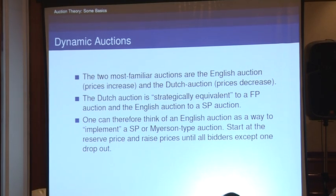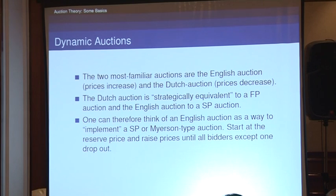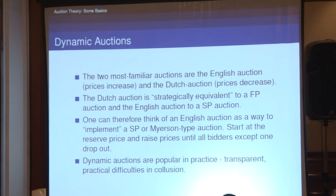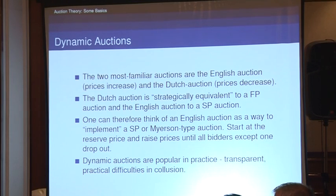One can think of an English auction, where prices rise until all except one bidder drops out, as a way to implement a Myerson-type optimal auction. Dynamic auctions are popular in practice — they're transparent, and they make collusion especially hard because everything is happening pretty much instantaneously, so you can't make plans about how to bid.